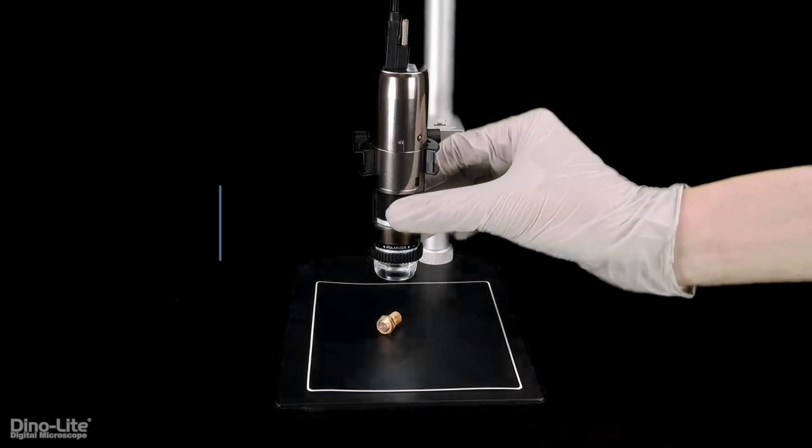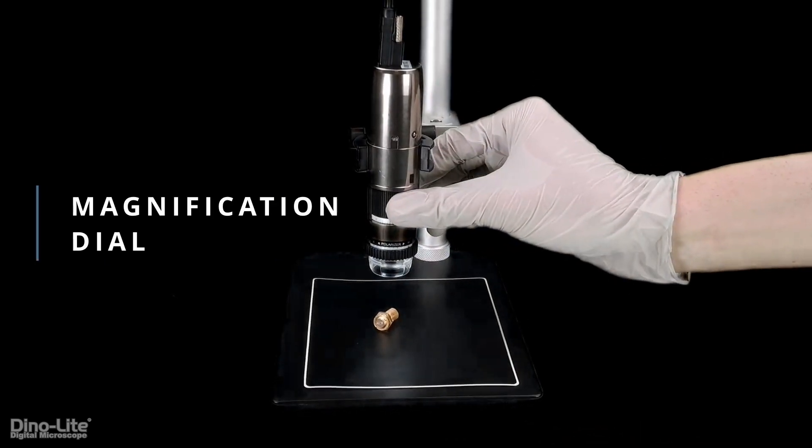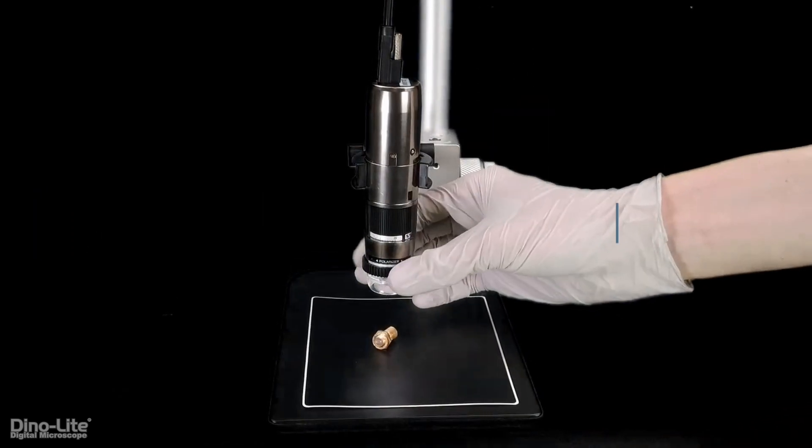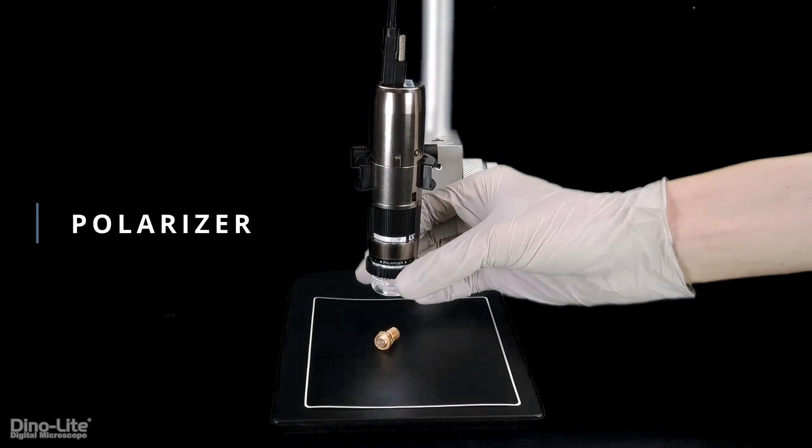Just below the scroll lock is your scope's magnification dial and polarizer, which you can use to adjust your scope's magnification or reduce glare, respectively.